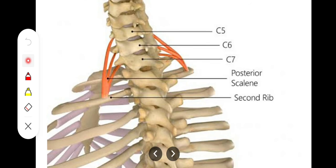The third muscle is scalenus posterior. Its origin is from the posterior tubercle of the transverse processes of cervical vertebrae C4, C5, and C6 — three transverse processes. It gets its insertion onto the outer surface of the second rib. So this one has a different insertion — on the second rib — while the other two have their insertion onto the first rib. It comes from the posterior tubercles of C4, C5, C6 and inserts onto the outer aspect of the second rib.